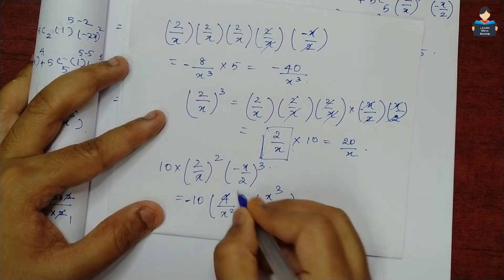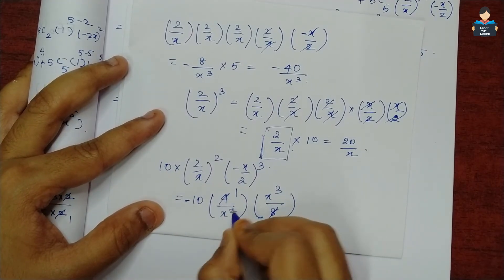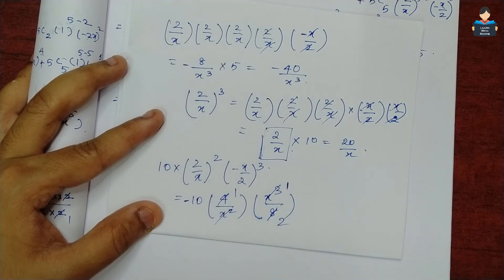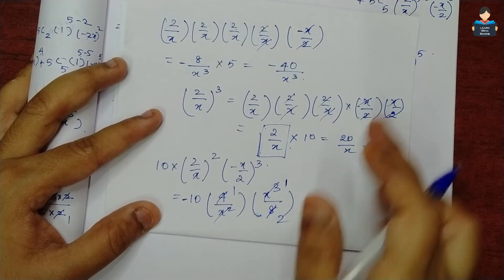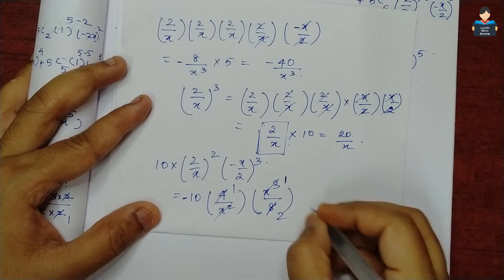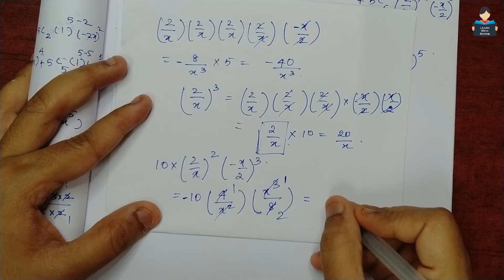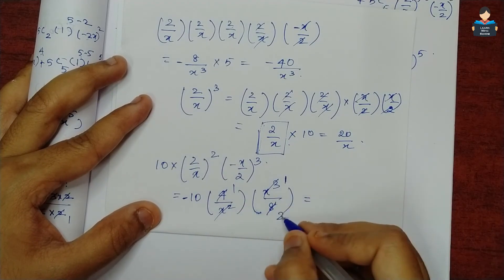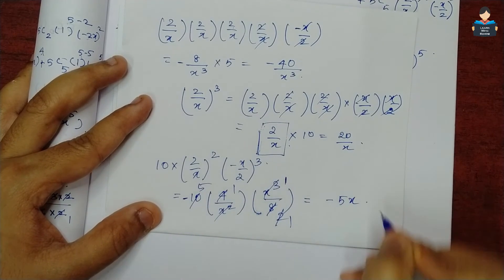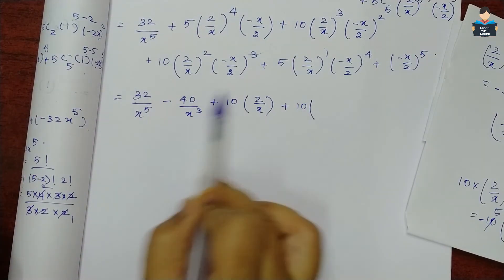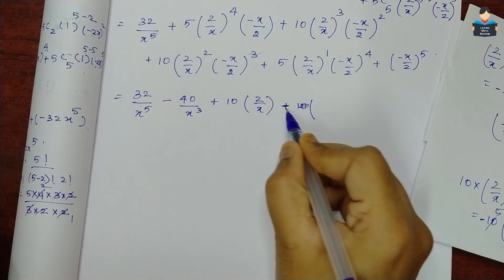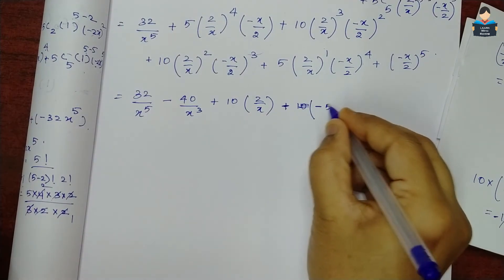Continuing to solve: cancelling common factors, we get terms including -5x. The 5C4 term gives 5·(2/x)·(x^4/16) = 5·2x^3/16 = 5x^3/8. Then the negative signs are handled: minus 5x is obtained here.